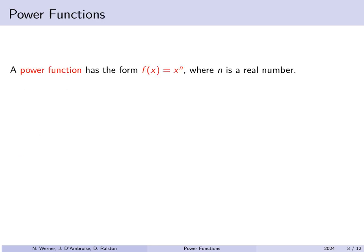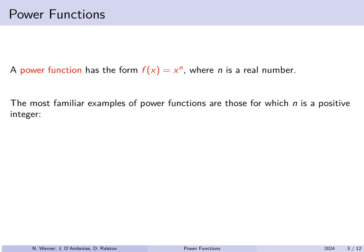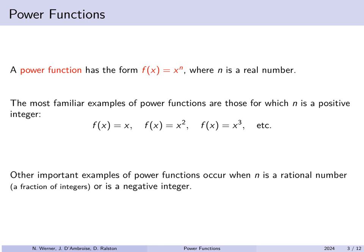A power function is a function of the form f(x) = x^n where n is any real number. The most familiar examples are those where n is a positive integer: f(x) = x, x squared, x cubed, etc. Other important examples occur when n is a rational number — that is, a fraction of integers — or when you have a negative integer as the exponent.